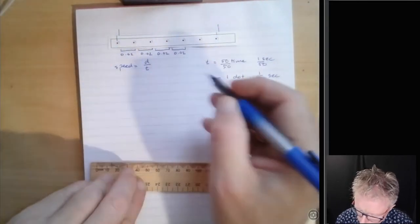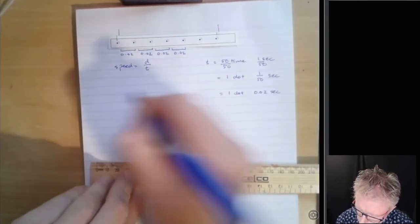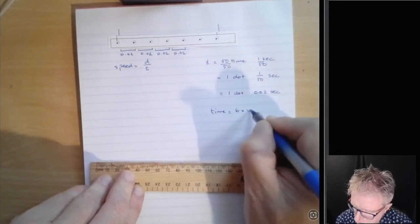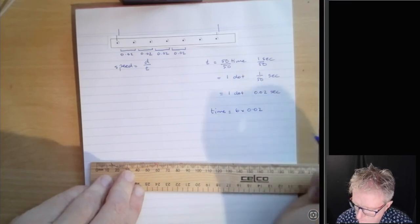So in terms of my time, alright, my time now that I'm going to be using, I'll do it over here, my time is going to be 6 times 0.02.